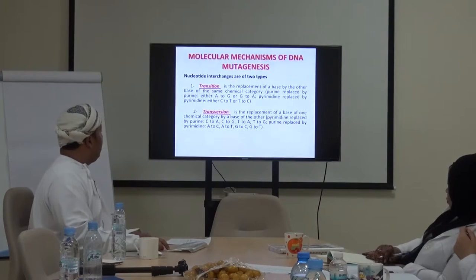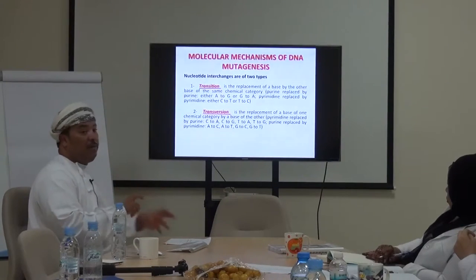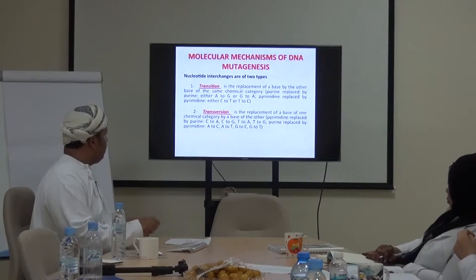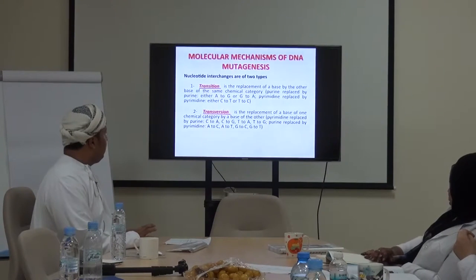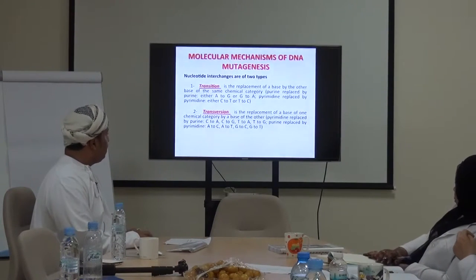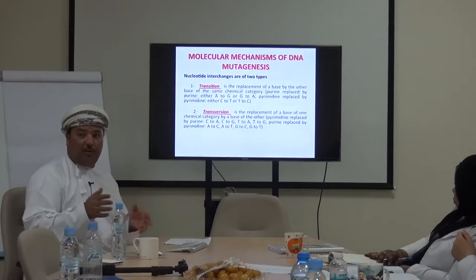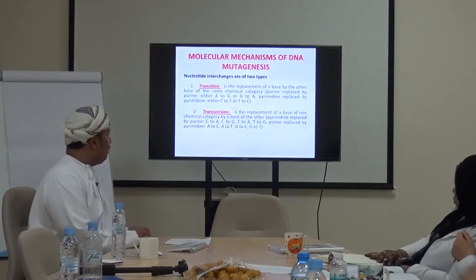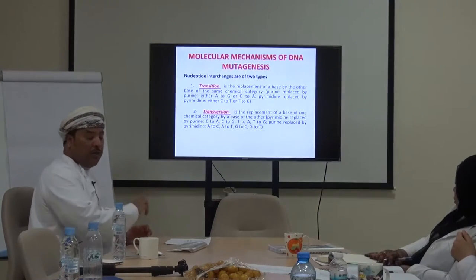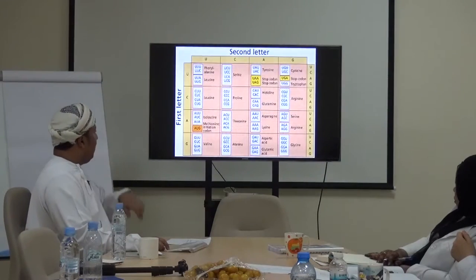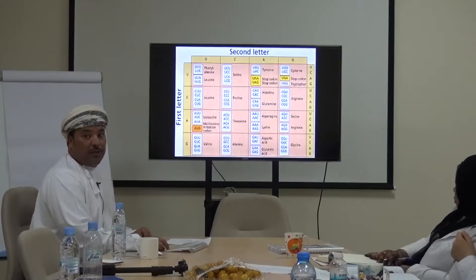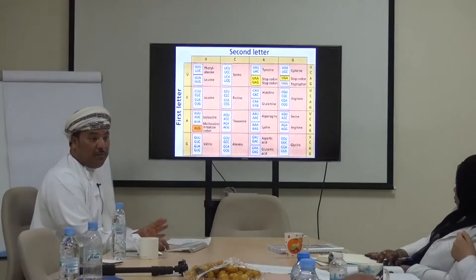Transitions are mutations within the same chemical group — purine to purine or pyrimidine to pyrimidine. Transversions are mutations from purine to pyrimidine or pyrimidine to purine. This table is very important and may come in MCQs — it is quite simple.